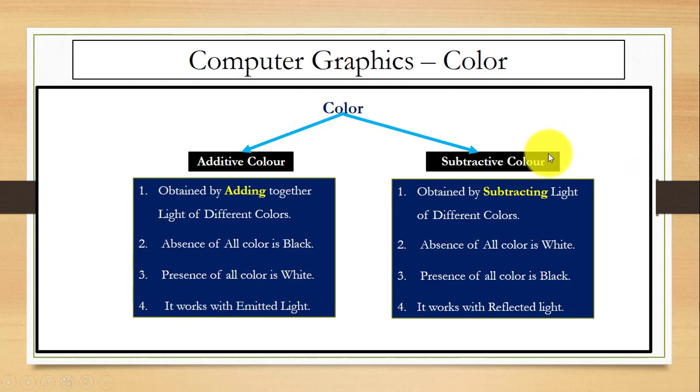In case of subtractive color, this is obtained by subtracting light of different colors. Here, absence of all color is white and the presence of all color is black. It works with reflected light.